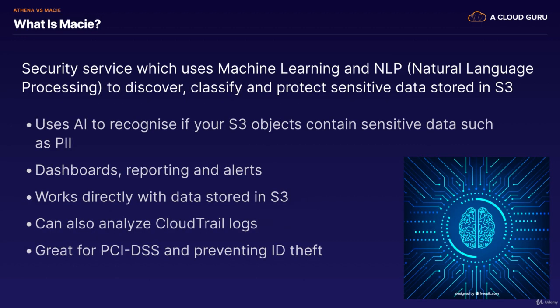Now, what is Macie? Macie is a security service that uses machine learning and natural language processing, or NLP, to discover, classify, and protect sensitive data stored in S3. It uses AI to recognize if your S3 objects contain sensitive data such as PII. It provides dashboards, reporting, and alerts, and works directly with data stored in S3. It can also analyze CloudTrail logs, and is great for PCI DSS compliance and preventing ID theft.